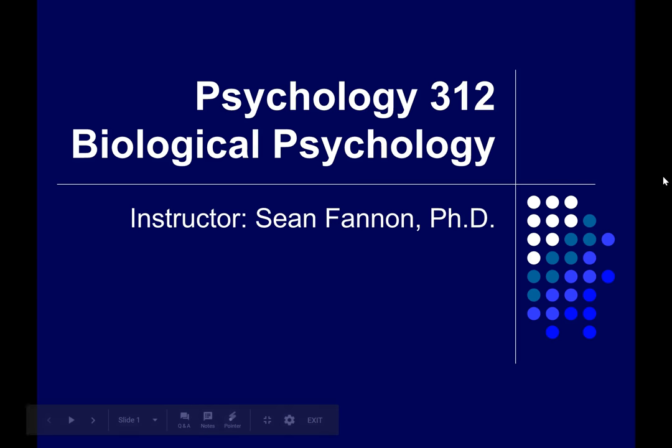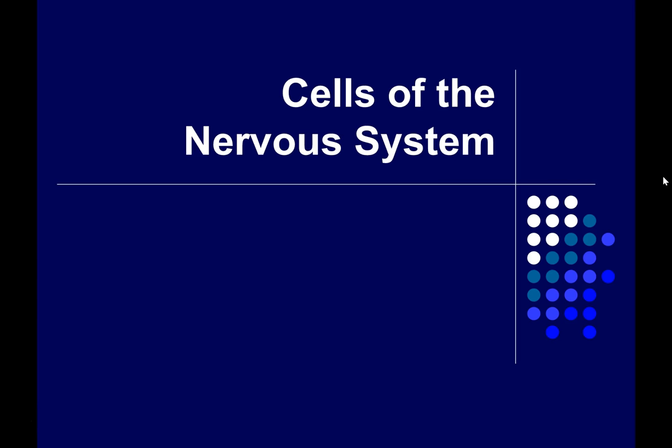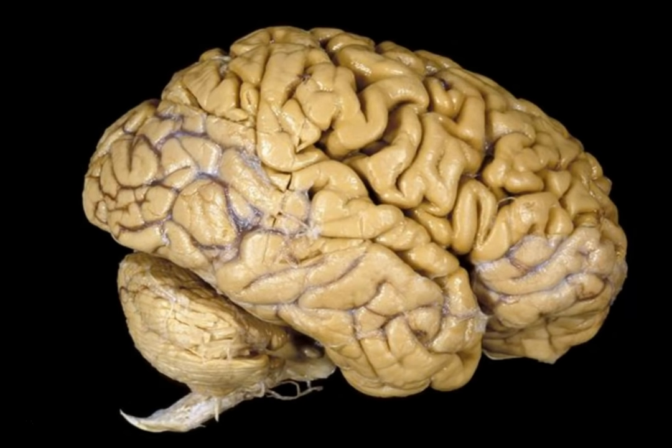Hi everybody. Today we're going to talk about the cells of the nervous system. Your brain is like every other part of your body in that it consists of cells. You really are a collection of many, many trillions of cells, and your brain is no different.